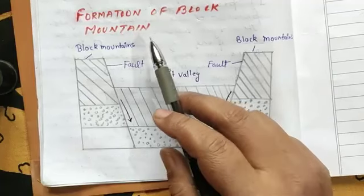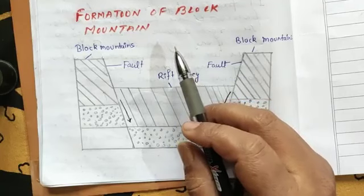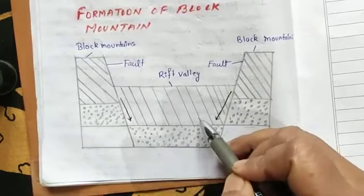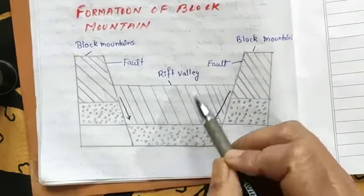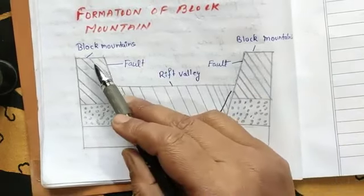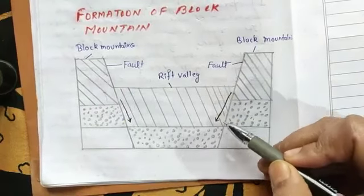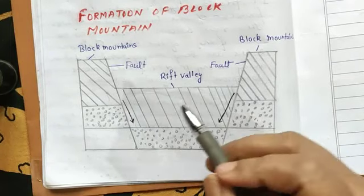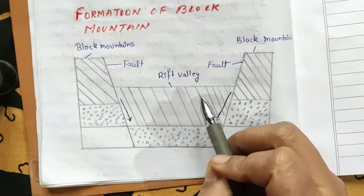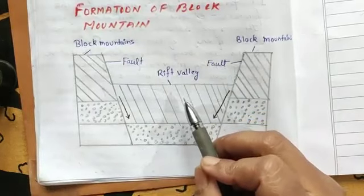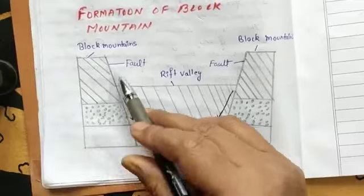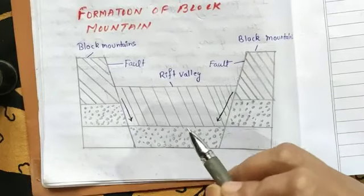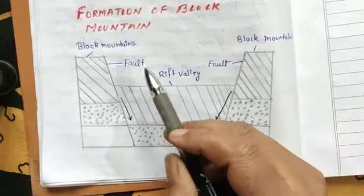Our second type is block mountains. How are block mountains formed? When the land gets uplifted between two faults, it is called a block mountain. These mountains have a flat top with very steep sides. In other words, when cracks or faults occur in the earth's crust, the land sinks, leaving upstanding blocks on either side. These are called block mountains.